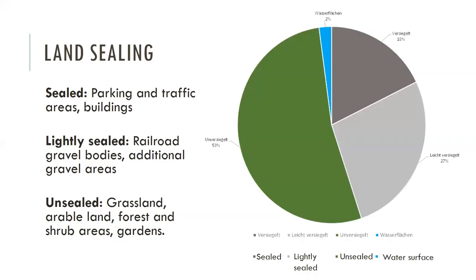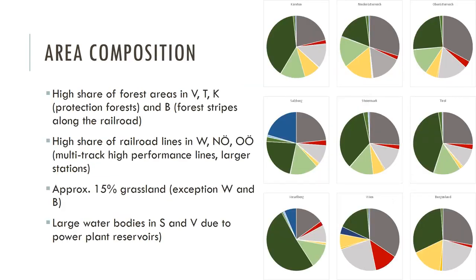We then made analysis about the sealing level or percentage of sealing. For all of Austria, approximately 50% is really unsealed, then different levels of sealing: slightly sealed meaning railroad gravel bodies or additional gravel areas, and fully sealed areas like parking and traffic areas and buildings. So there is a huge potential to promote biodiversity, nature-based solutions, and other strategies.